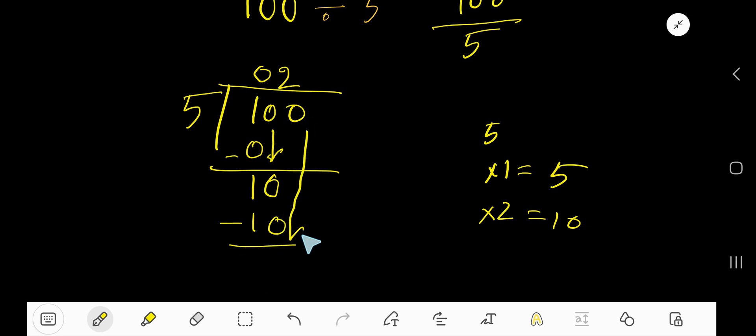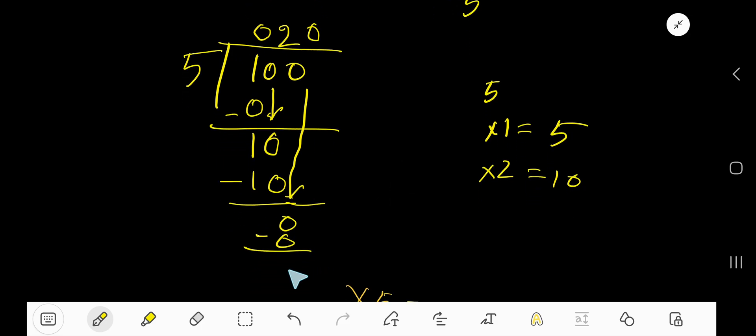Bring down this 0. 5 goes into this 0, 0 times. 0 times 5 is 0. If you subtract, then you are getting 0.